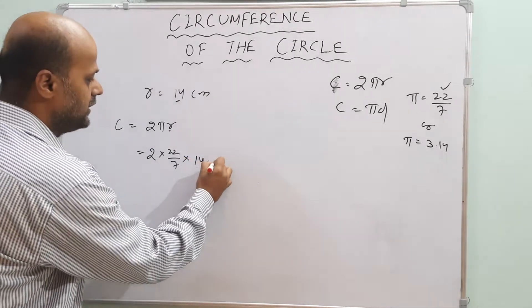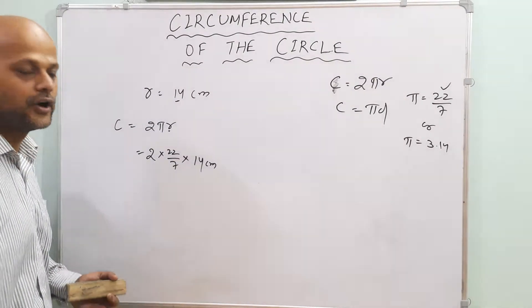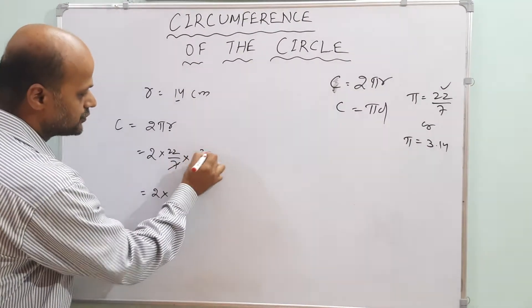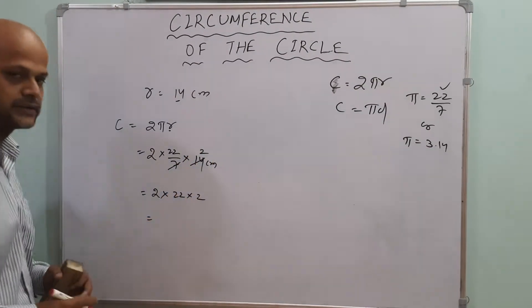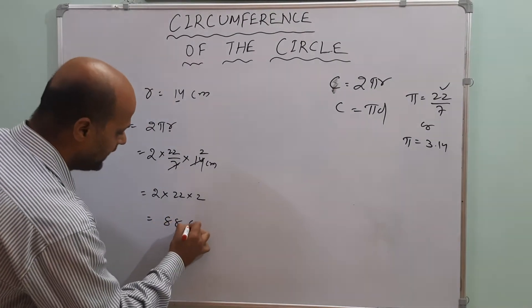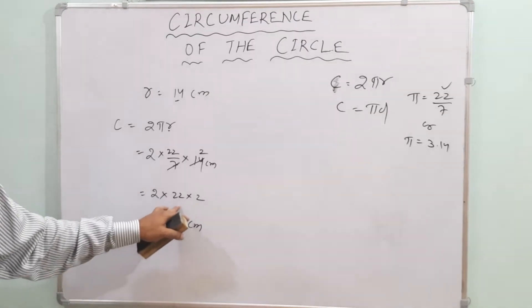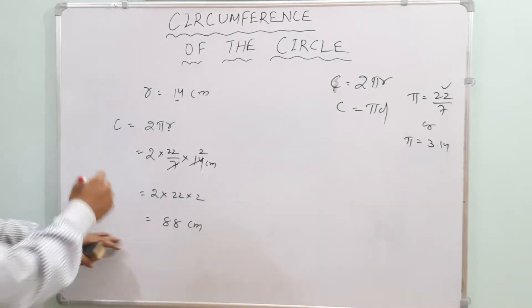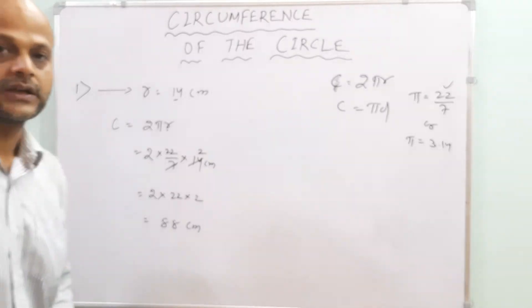Cancel 14 with 7 — you get 2. Then 2 × 22 × 2 = 88. So the circumference is 88 centimeters. This is how you find the circumference when the radius is given.